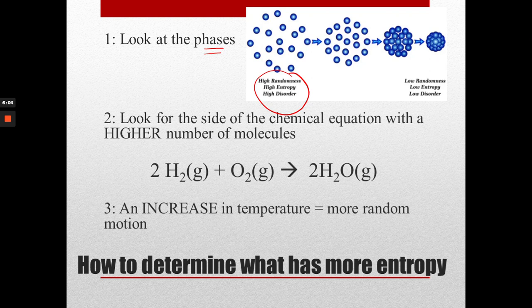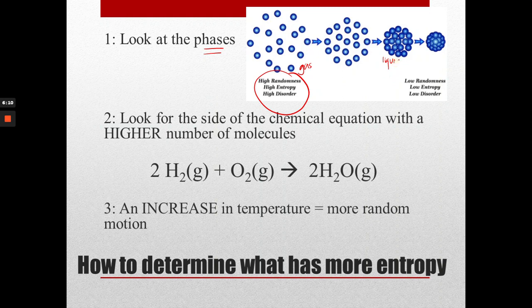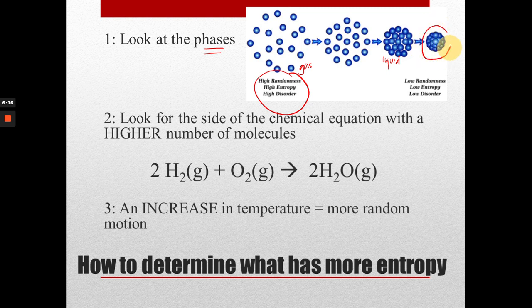As you bring those molecules of gas slower and slower together into liquid form, liquids are still moving around, but they are more ordered than a gas. And by the time you get them here to a solid, solids have low order, low entropy, low randomness.